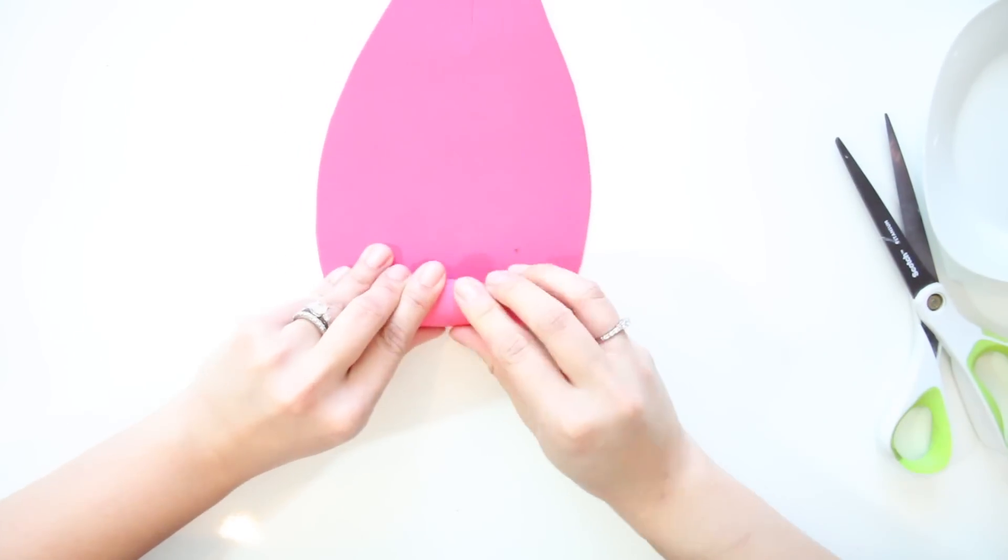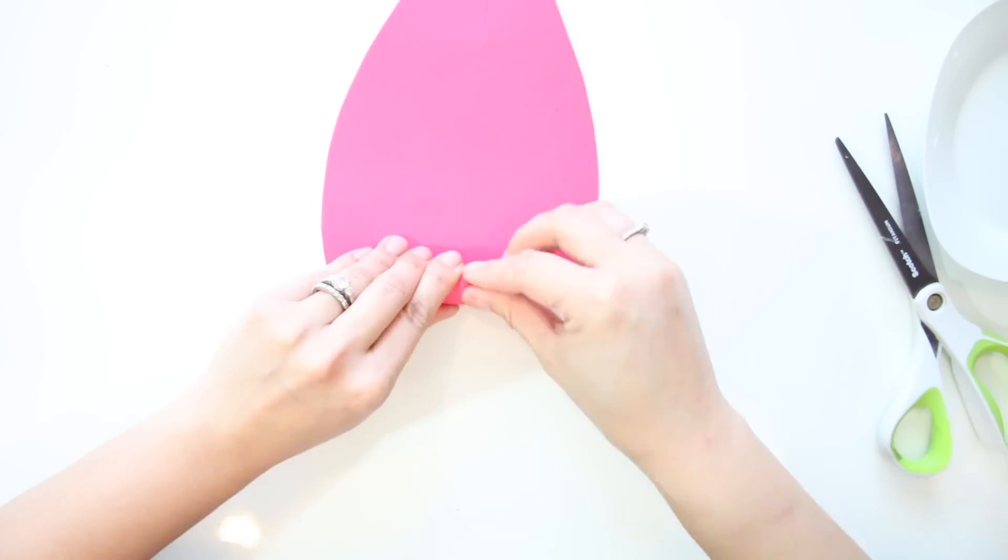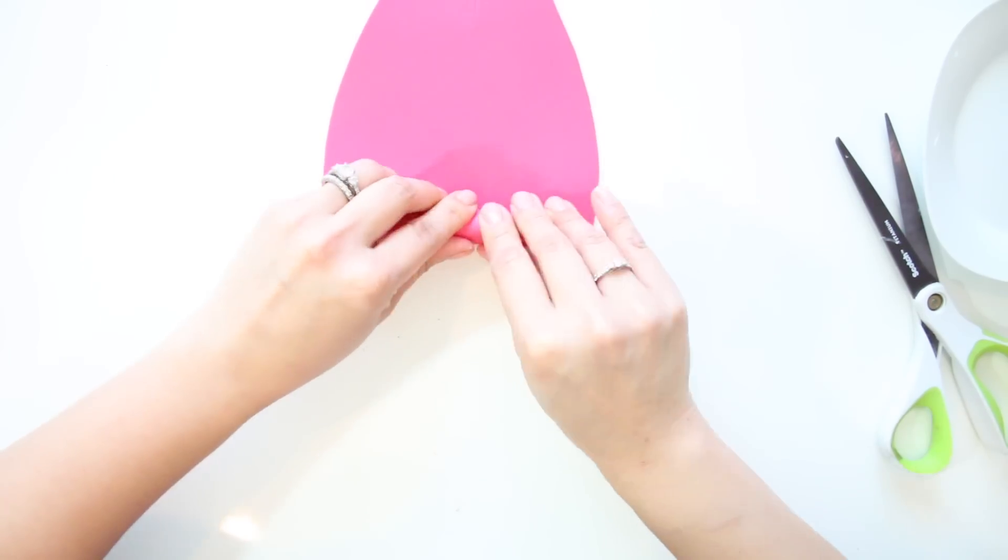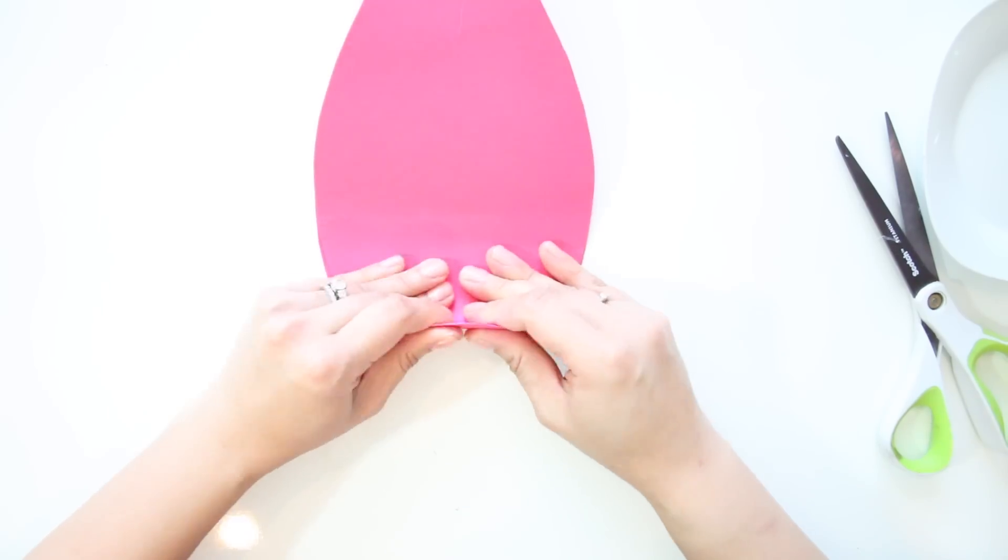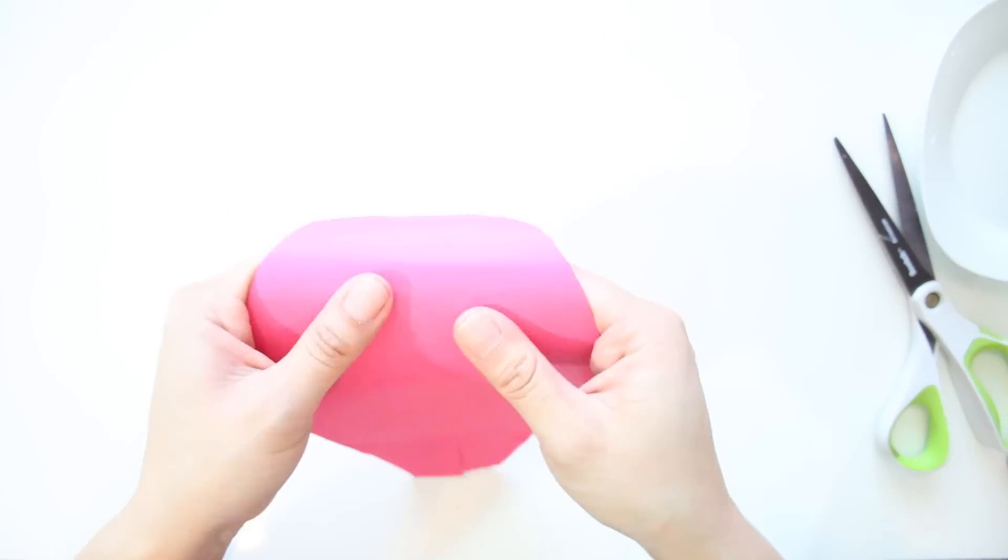Take all your petals and with the widest part at the bottom, roll the petals away from you to create a curl. You can use a pencil to do this, but I like to just use my hands.